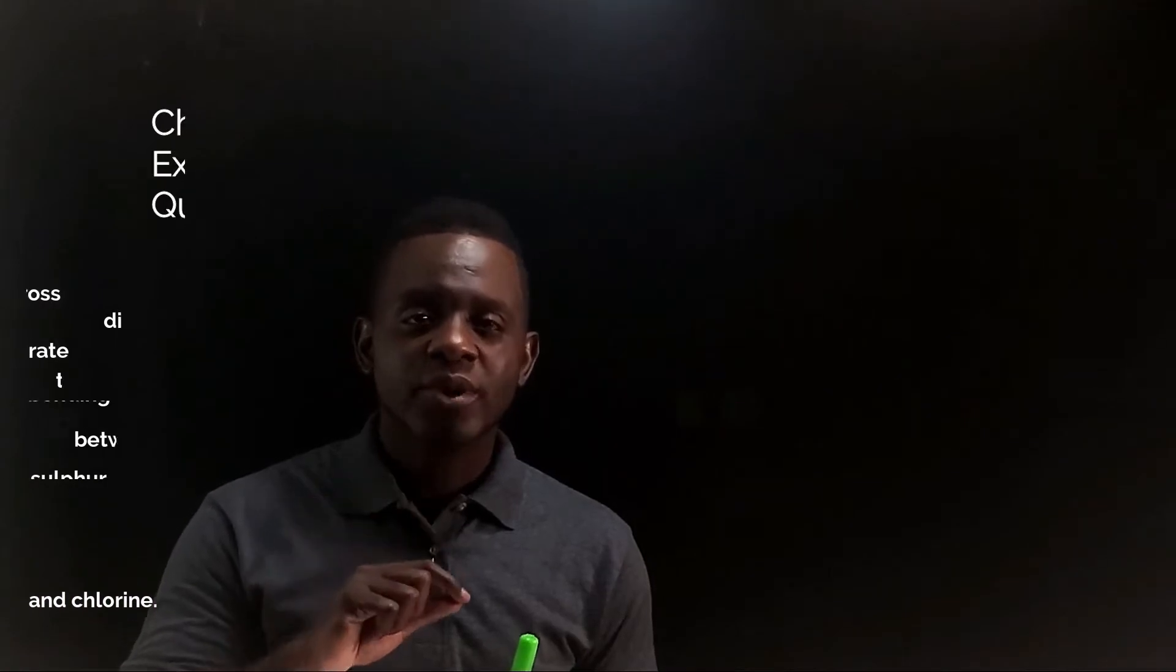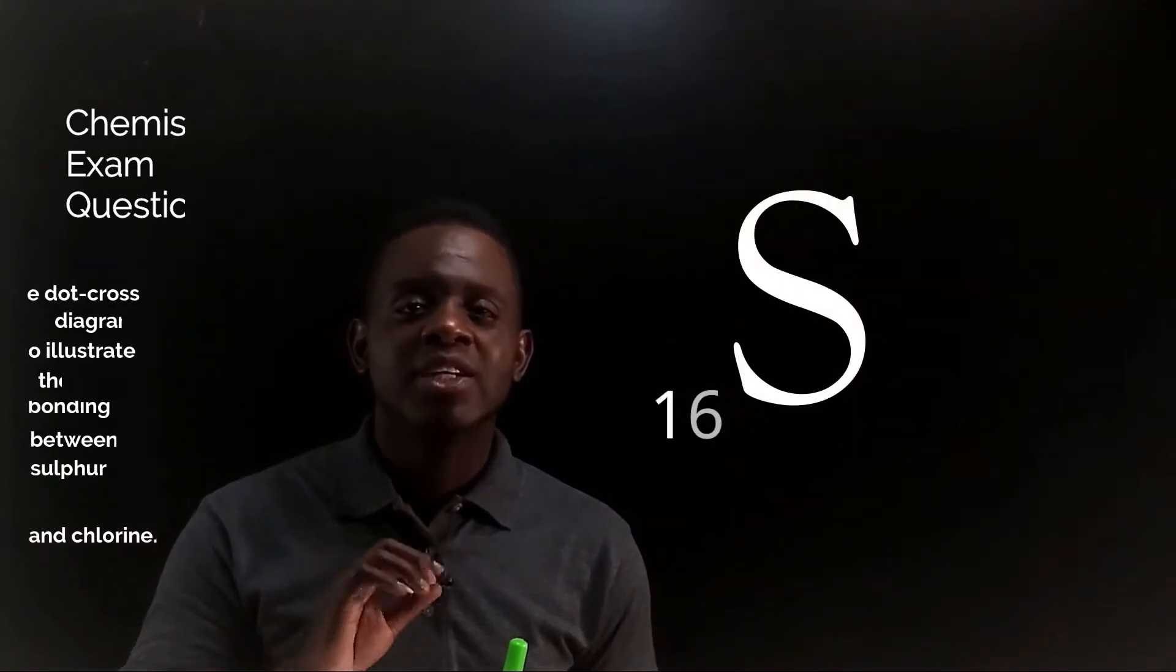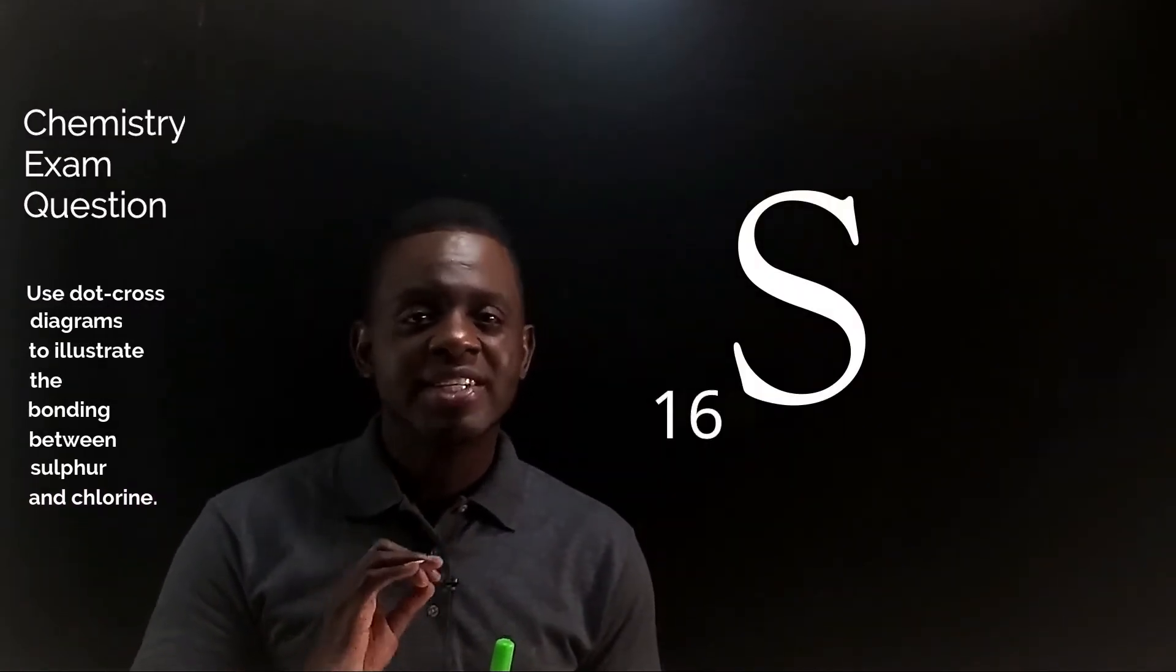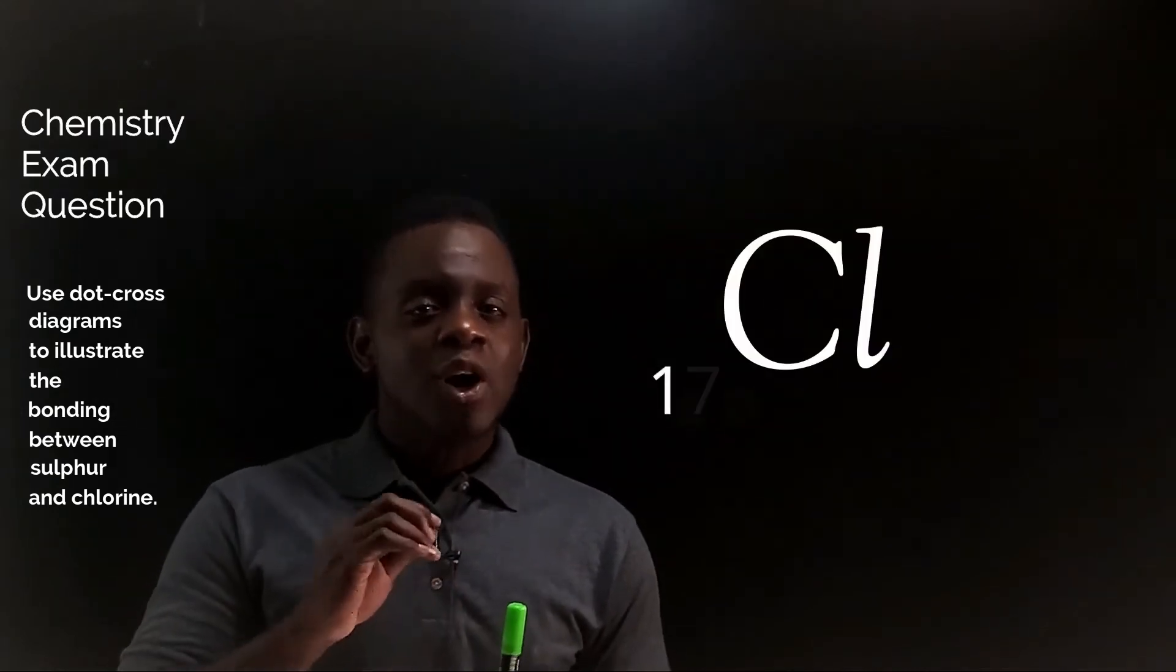So for this question we need to start with the atomic number for sulfur which is 16 and the atomic number for chlorine which is 17.